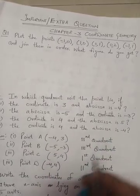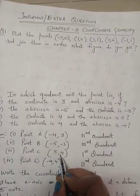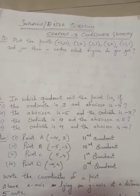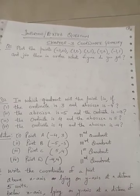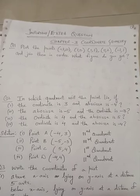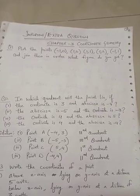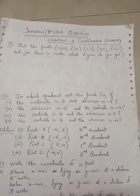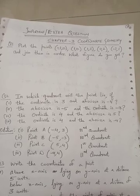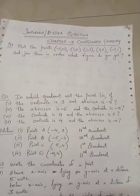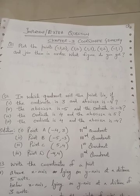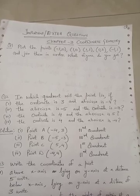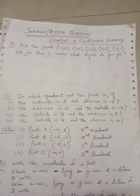If both coordinates are negative, the point lies in the third quadrant. If both are positive, it lies in the first quadrant. If x is negative and y is positive, it lies in the second quadrant. If x is positive and y is negative — plus, minus — that means the fourth quadrant.